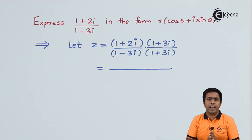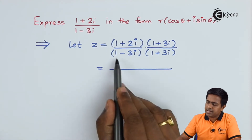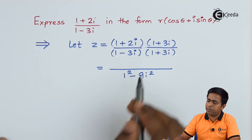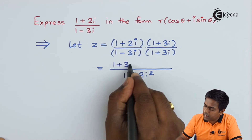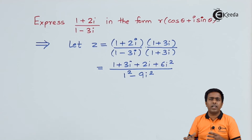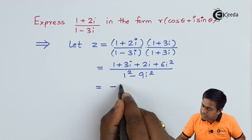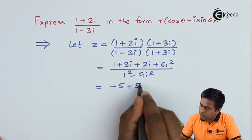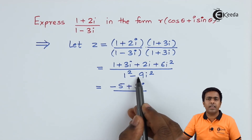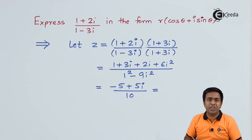In the denominator we apply the identity (a - b)(a + b) = a² - b², giving us 1² - 9i². In the numerator, multiplying the second bracket by 1 gives 1 + 3i, and multiplying by 2i gives 2i + 6i². Since i² = -1, we get -6 + 1 = -5 and 3i + 2i = 5i in the numerator. In the denominator, -9 × (-1) = 9, and 9 + 1 = 10.